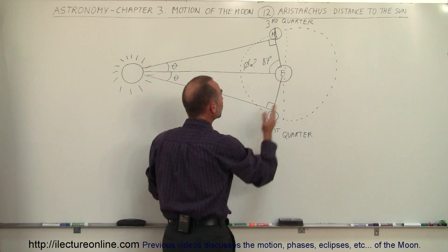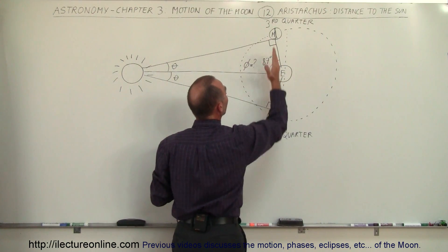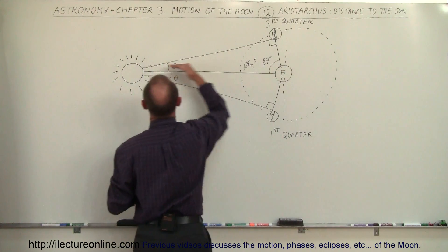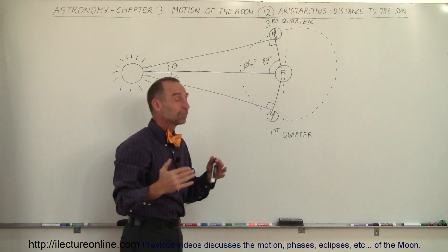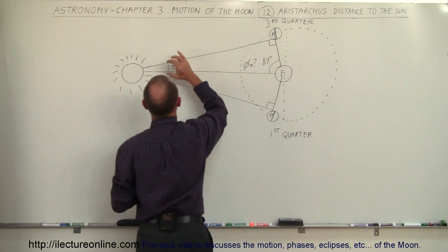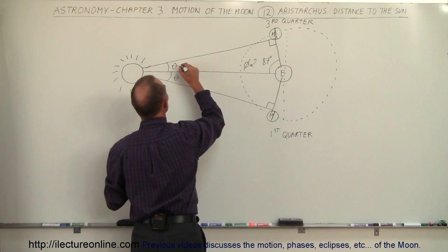He figured out that the moon would be at its first quarter and third quarter at an 87 degree angle with the line between the earth and the sun—of course that's called the ecliptic plane. Therefore, he figured that this angle is 3 degrees, so this angle had to be 3 degrees as well.